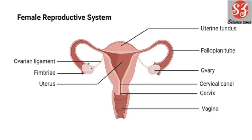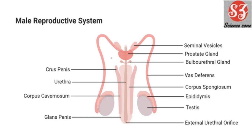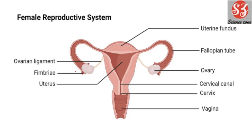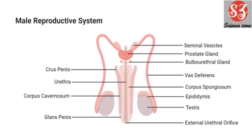Next is female reproductive system — a simple diagram you need to remember. Along with that, the male reproductive system also has a simple diagram to remember. These two diagrams are in your textbook but without labelling; here they are provided with labels. You should prepare both, as either one can come in the question paper.